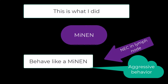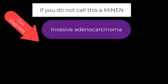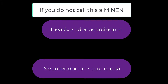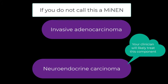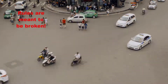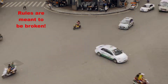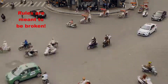In fact, the lymph node metastasis was a neuroendocrine carcinoma. Now, if you do not want to call this a MiNEN, I would describe the two components, but your clinician will most likely treat the neuroendocrine carcinoma component. So, there are rules — but if you break them, things will still be okay.